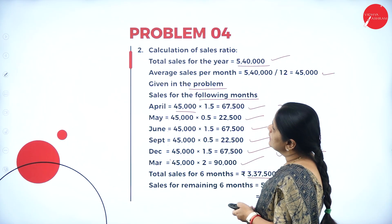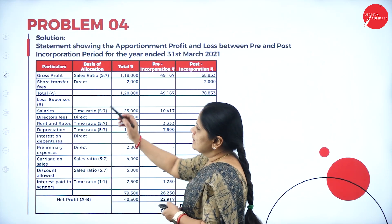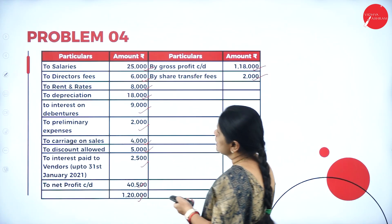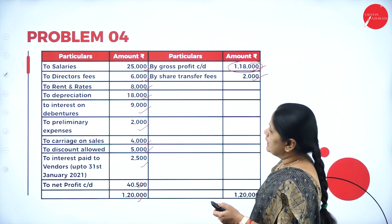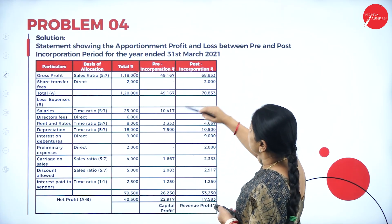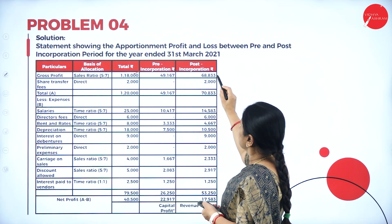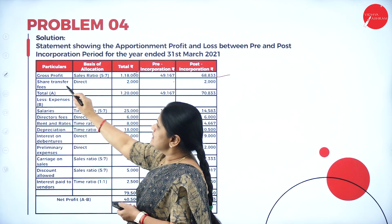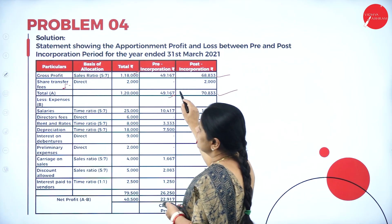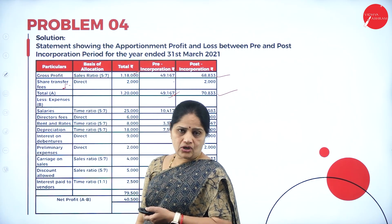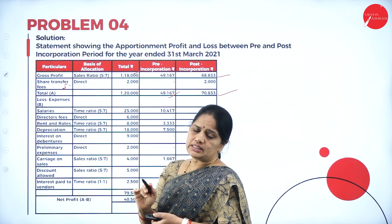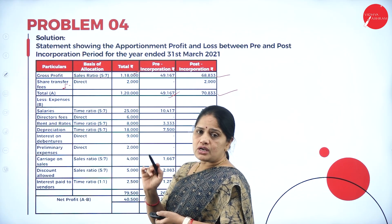Now we calculate the problem. The first entry is always gross profit, which is given as 1,18,500. We divide it in the ratio of 5 is to 7. Share transfer fees is income to the company, so it goes entirely to the post-incorporation period. All expenses related to sales are divided on the basis of sales ratio, and those not related to sales are divided on the basis of time ratio.